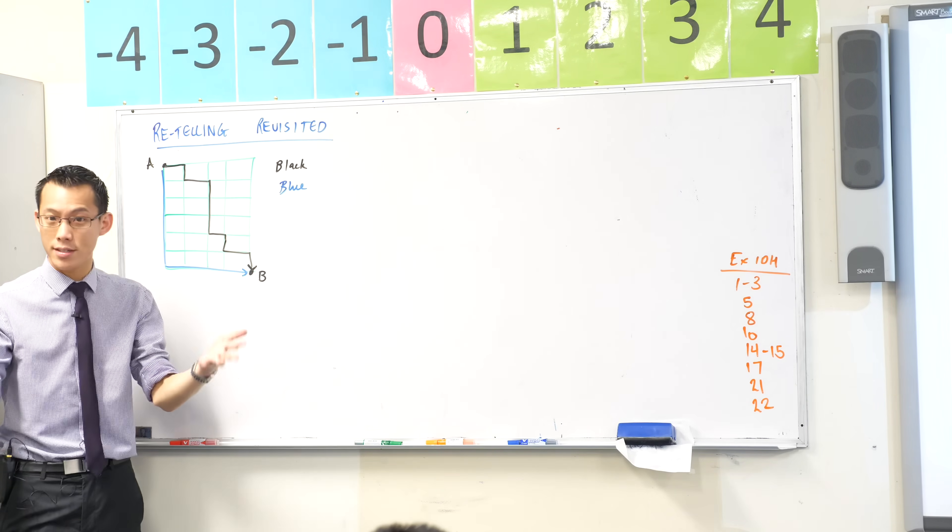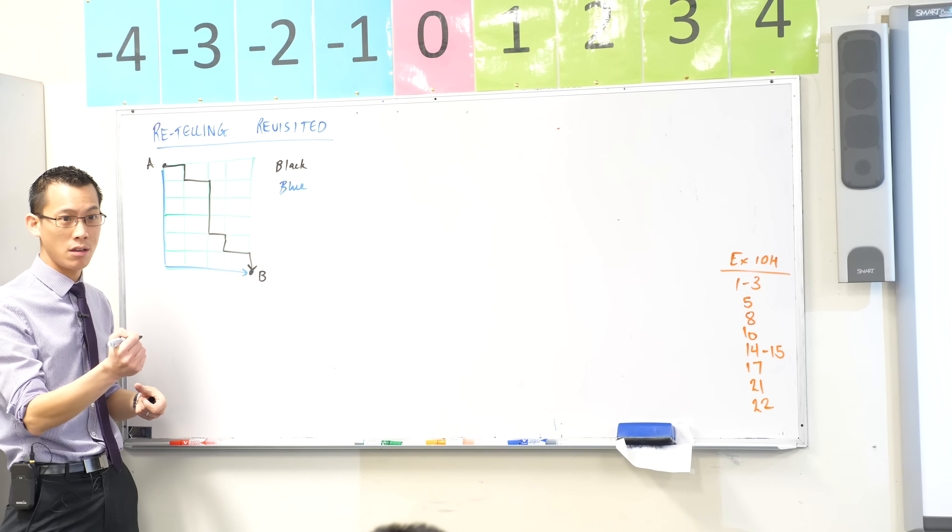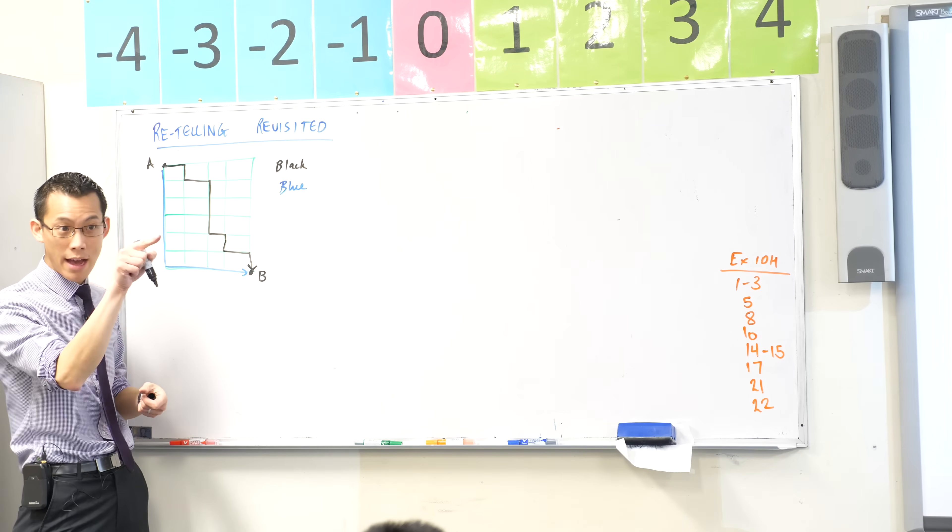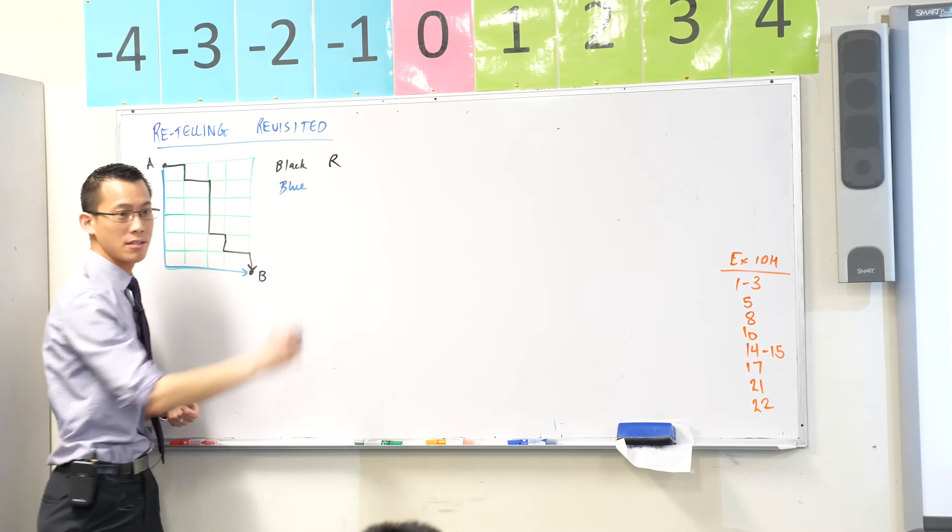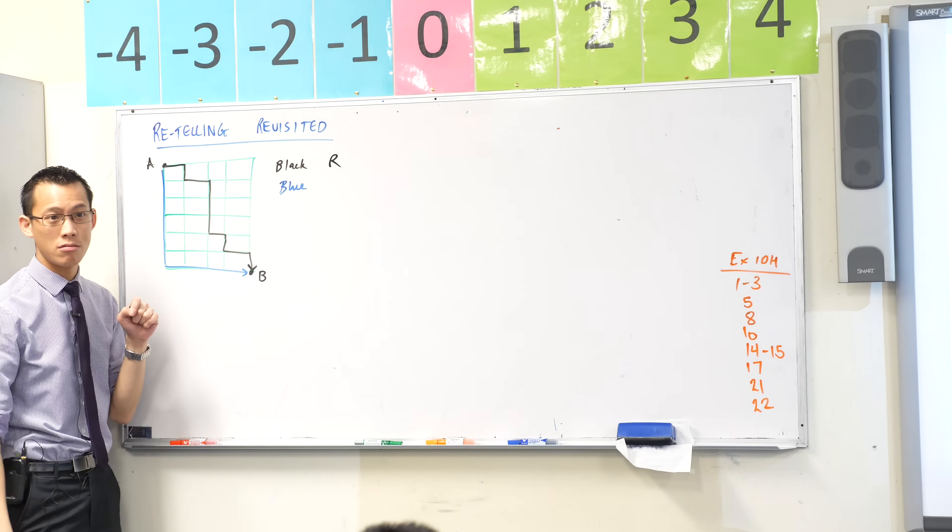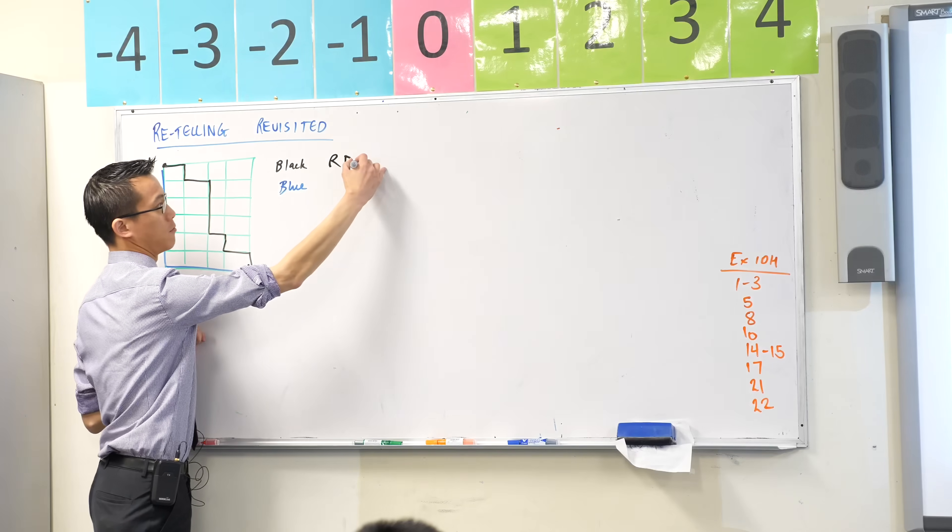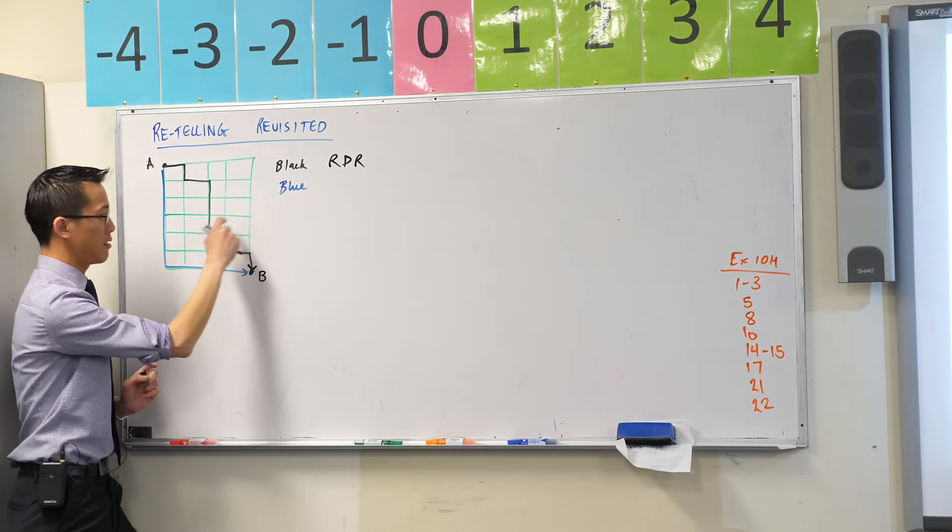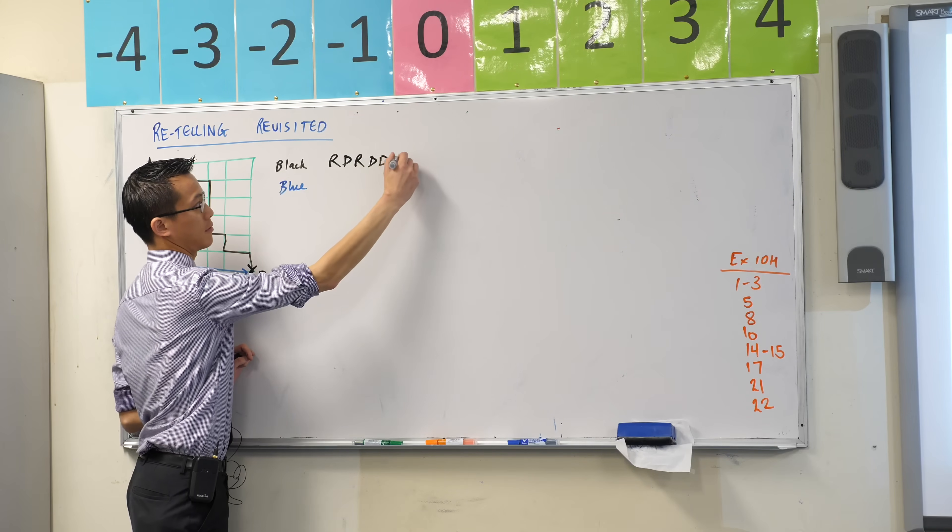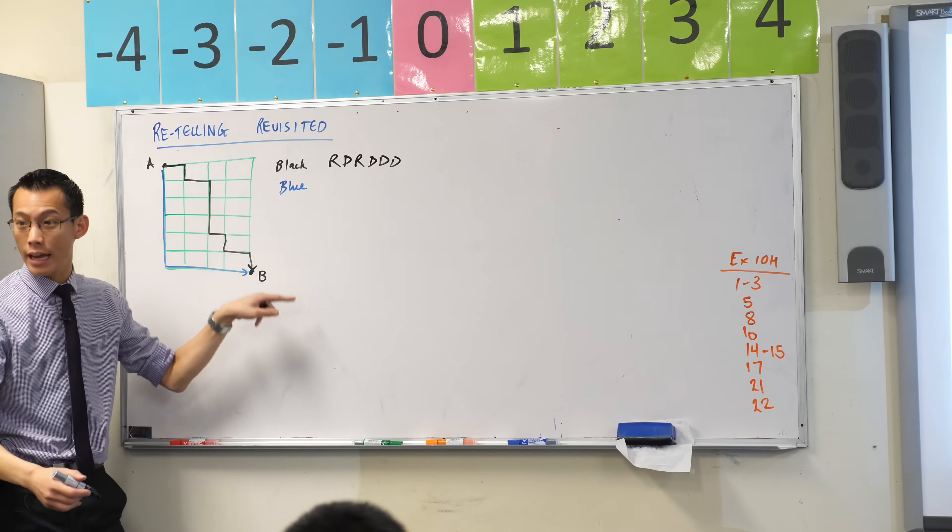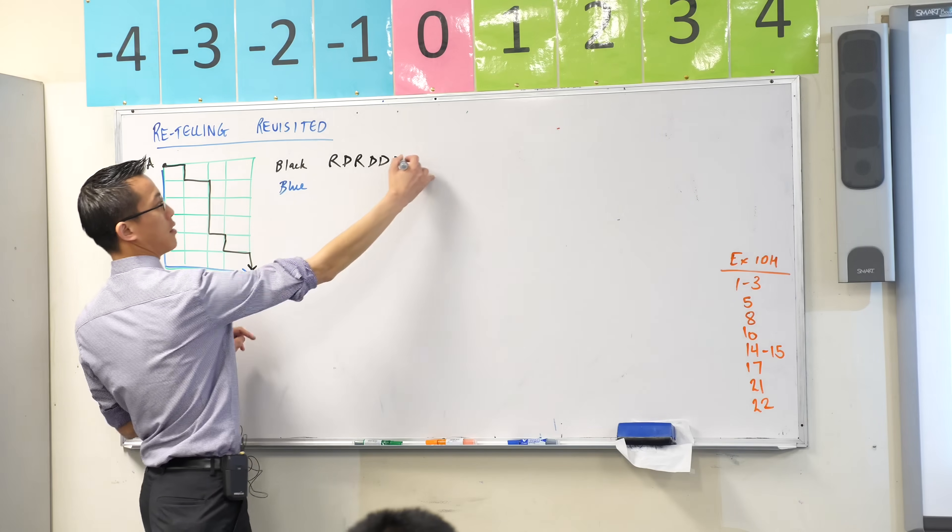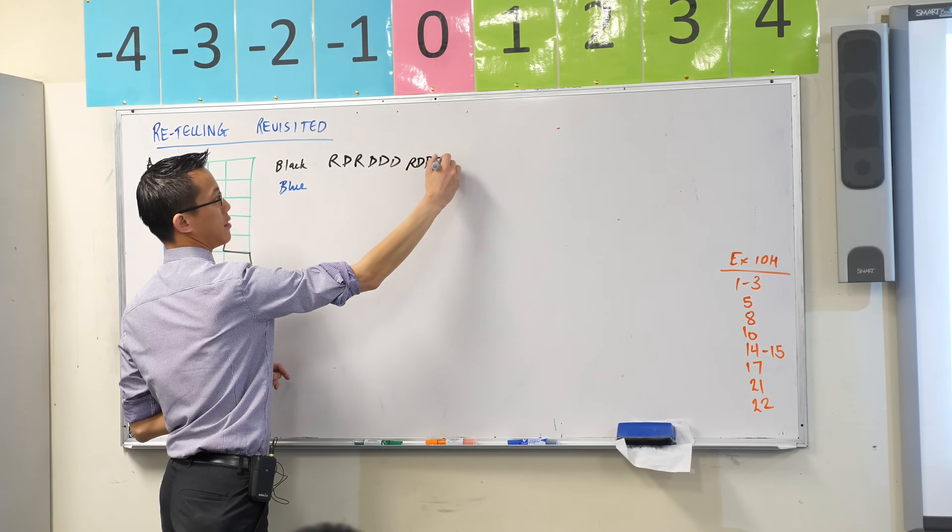With the black path, what's the very first thing that you do? You go to the right. You say right, and then after you go right, you go down, and then you go right again, and then you go down, down, down. And then I think we alternate all the way to the end. Is that right? Right, down, right, down. Is that okay?